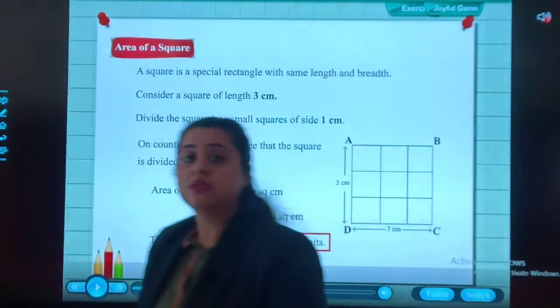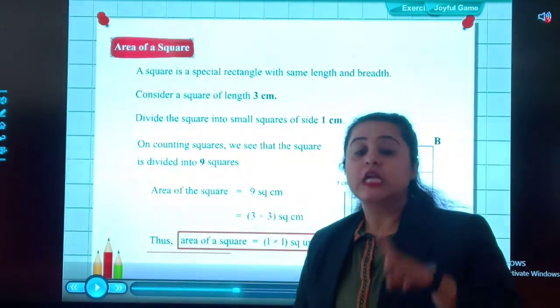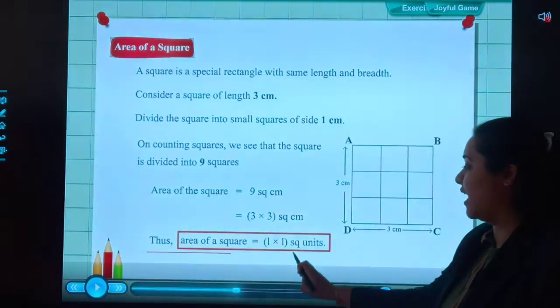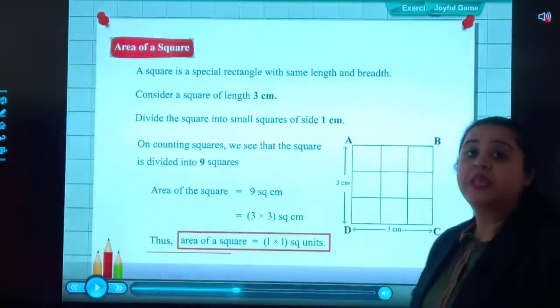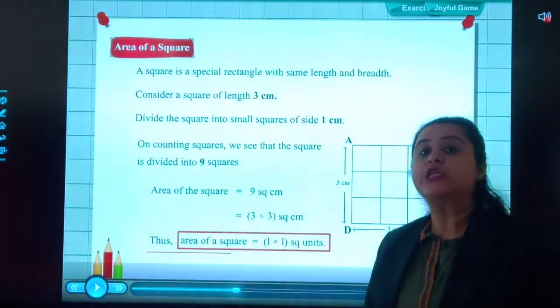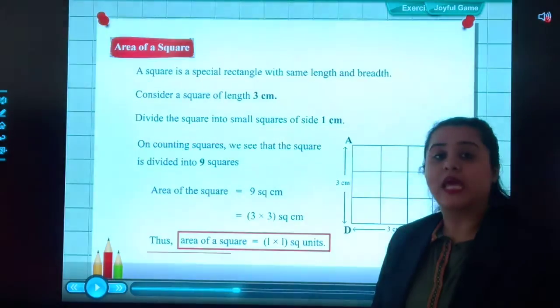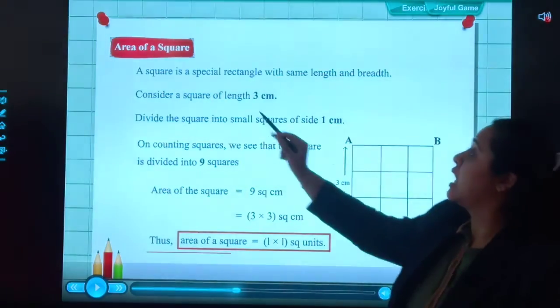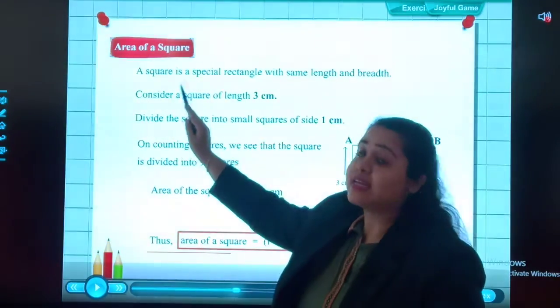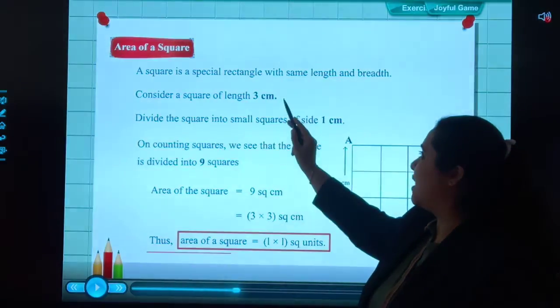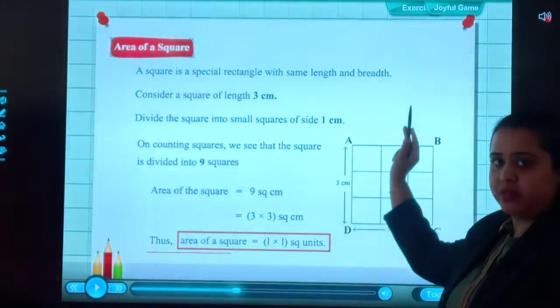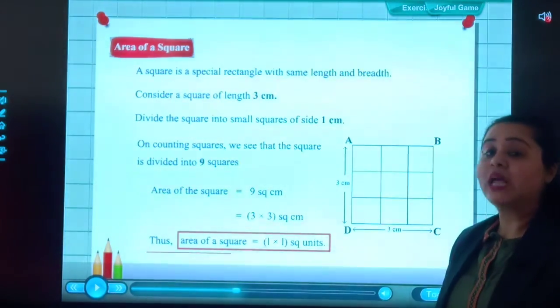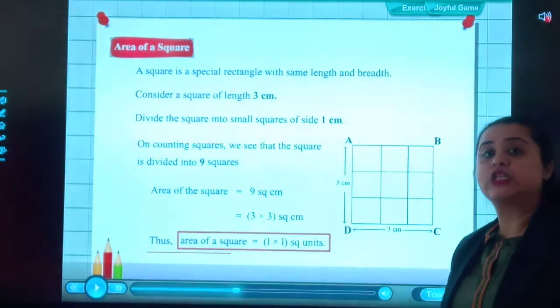So students, the formula for the square you have to learn is L × L square units. Area of rectangle is length into breadth, and area of square is length into length. The meaning is, a square is a special rectangle with same length and breadth. The length and the breadth of the square is same, so the formula is length into length.